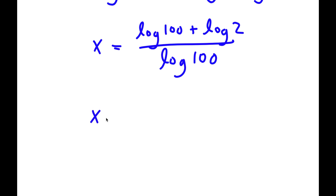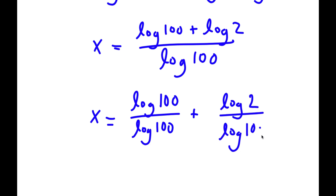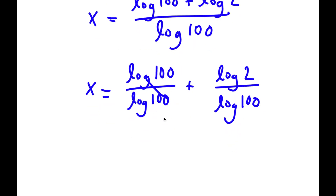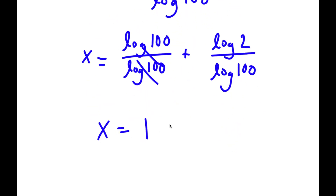Now this is the same thing as log 100 over log 100 plus log 2 over log 100. And log 100 over log 100, those two cancel out. So now I have x is equal to 1 plus log 2 over log 100.